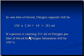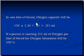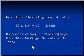If a person is carrying 211 milliliters of oxygen per liter of blood, their oxygen saturation will be 100% — the blood is carrying the maximum amount of oxygen it can carry. But that is not always the case; oxygen saturation can drop. Anything between 92 to 98% is considered normal.